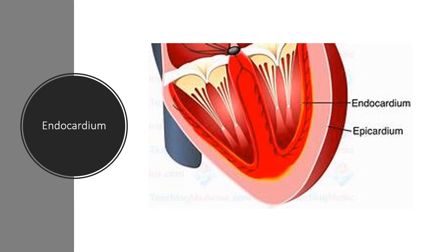The endocardium is a very thin layer of cells that lines the interior chambers of the heart. These cells make direct contact with the blood and are responsible for providing a smooth surface for the blood to glide against. Just as cooking spray forms a layer between the cake pan and the dough to keep it from sticking, the endocardium creates a silky smooth layer that keeps blood cells from collecting or sticking to the myocardium.